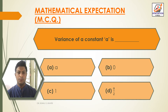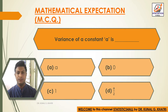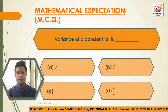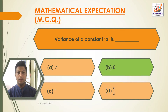Variance of a constant A is: Option A — A; Option B — 0; Option C — 1; Option D — A by 2. The answer is Option B: 0. The variance of a constant A is 0.